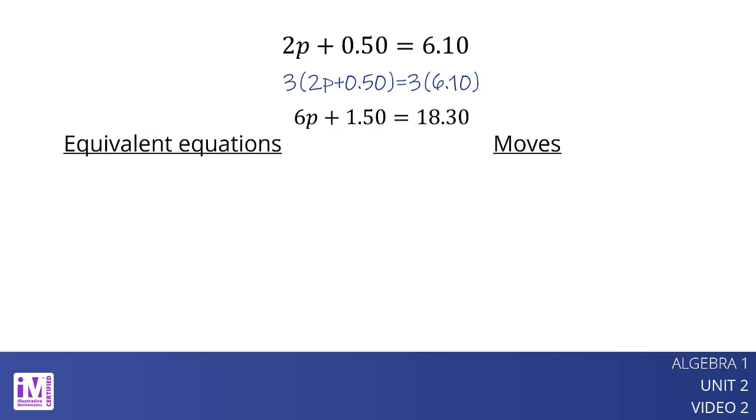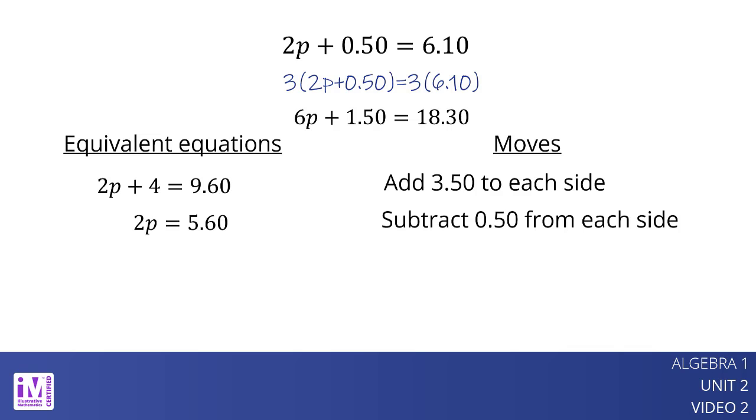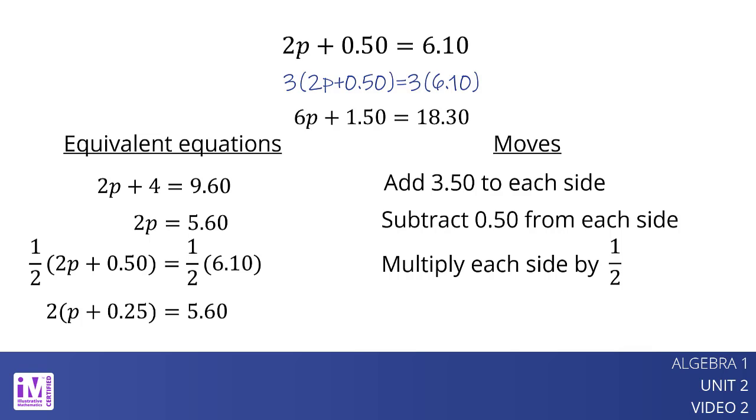Here are some other equations that are equivalent to 2p plus 0.5 equals 6.10, along with the moves that led to these equations. Add 3.50 to each side of the original equation. Subtract 0.50 from each side of the original equation. Multiply each side of the original equation by 1 half. Apply the distributive property to rewrite the left side.